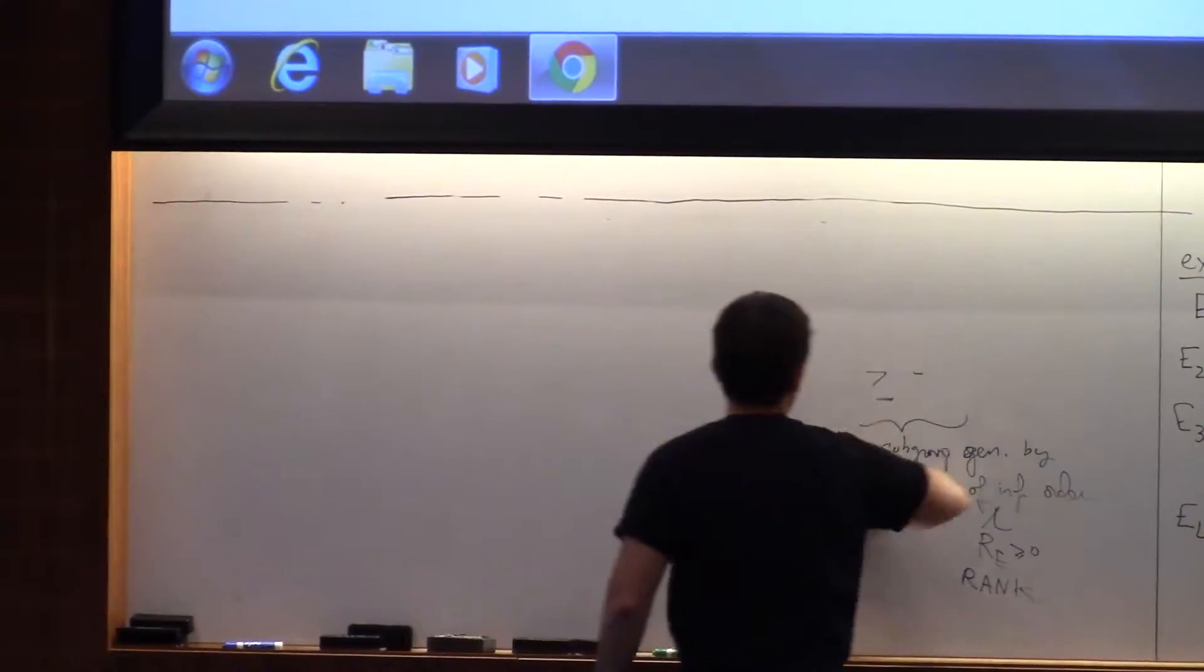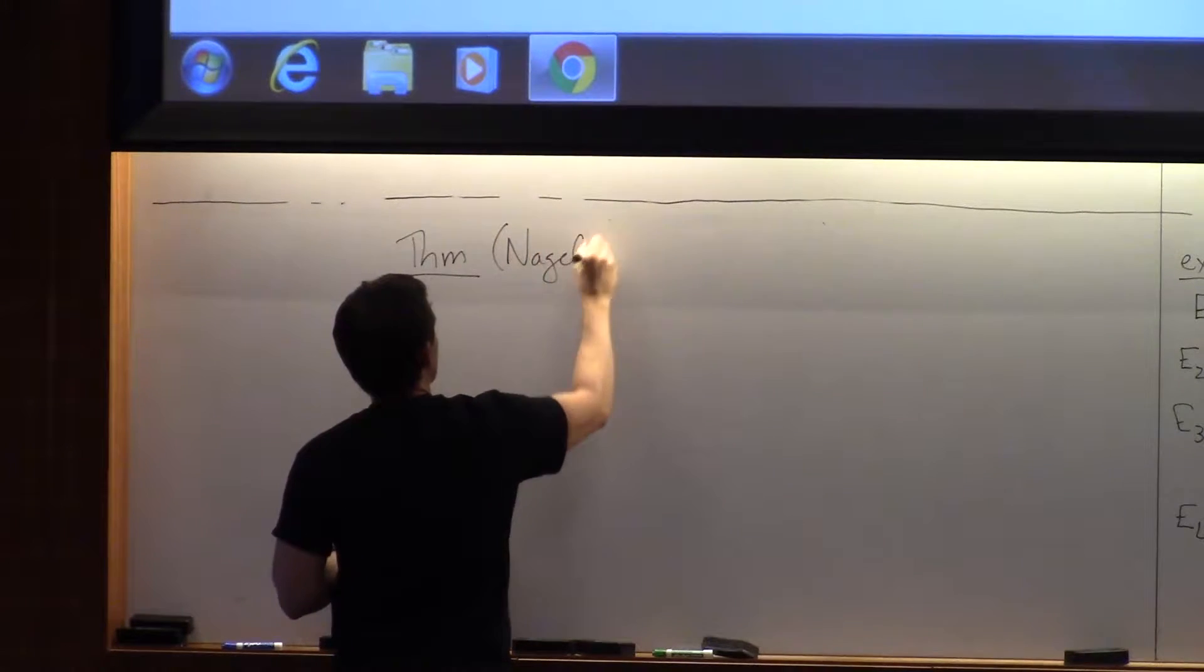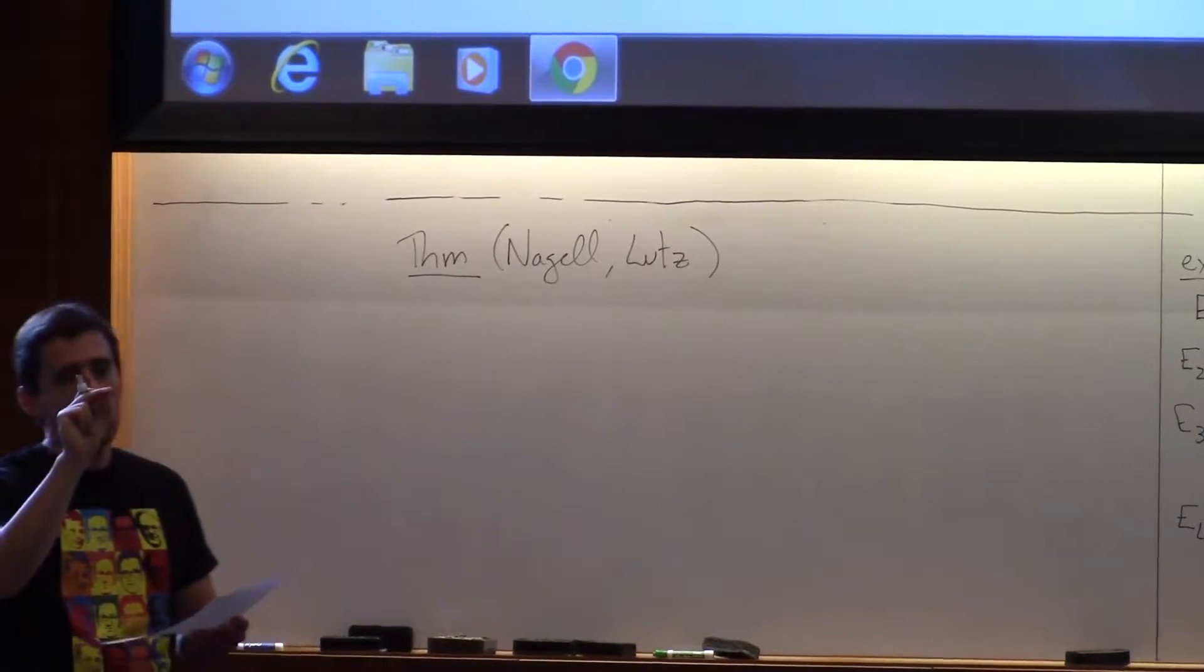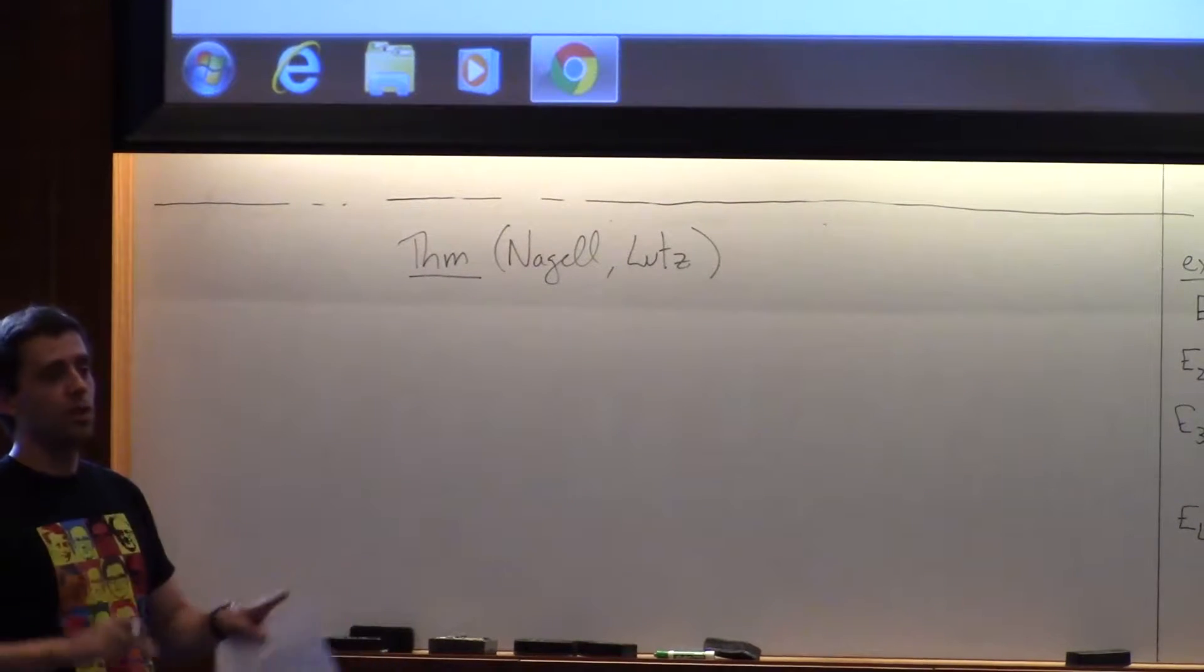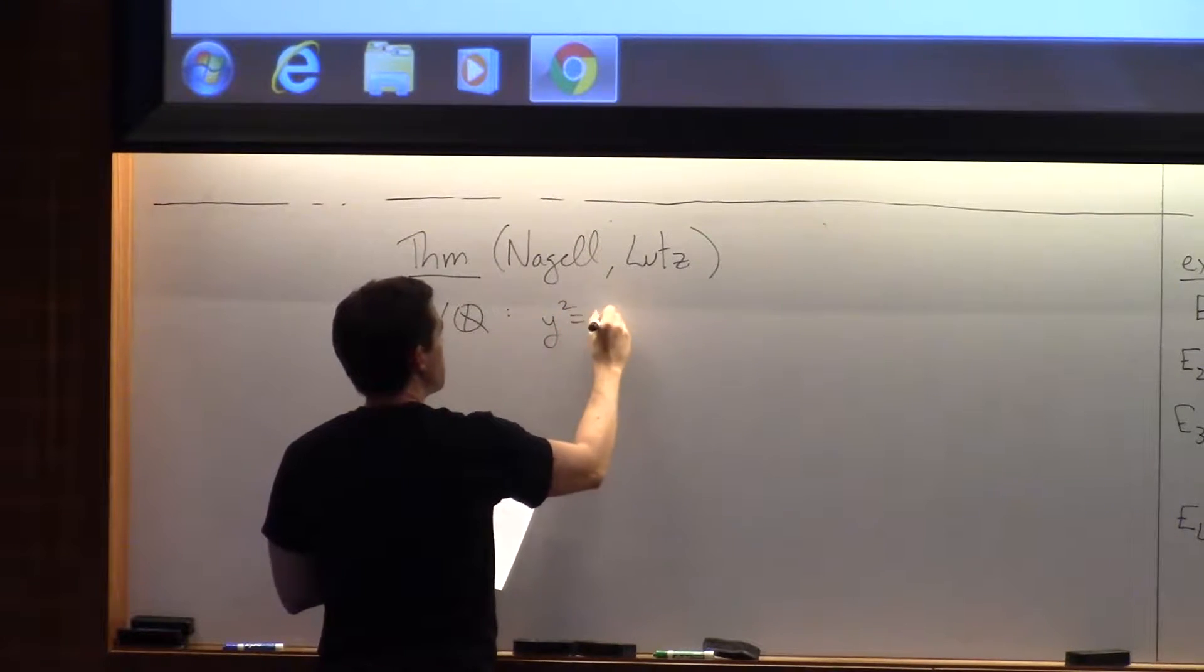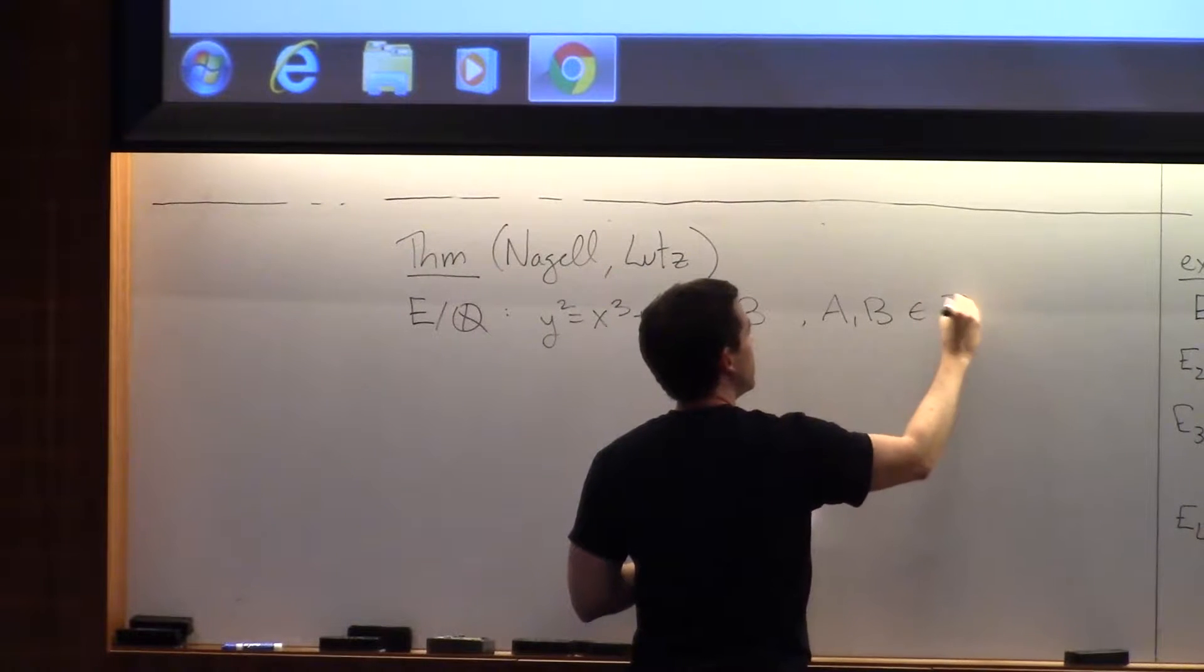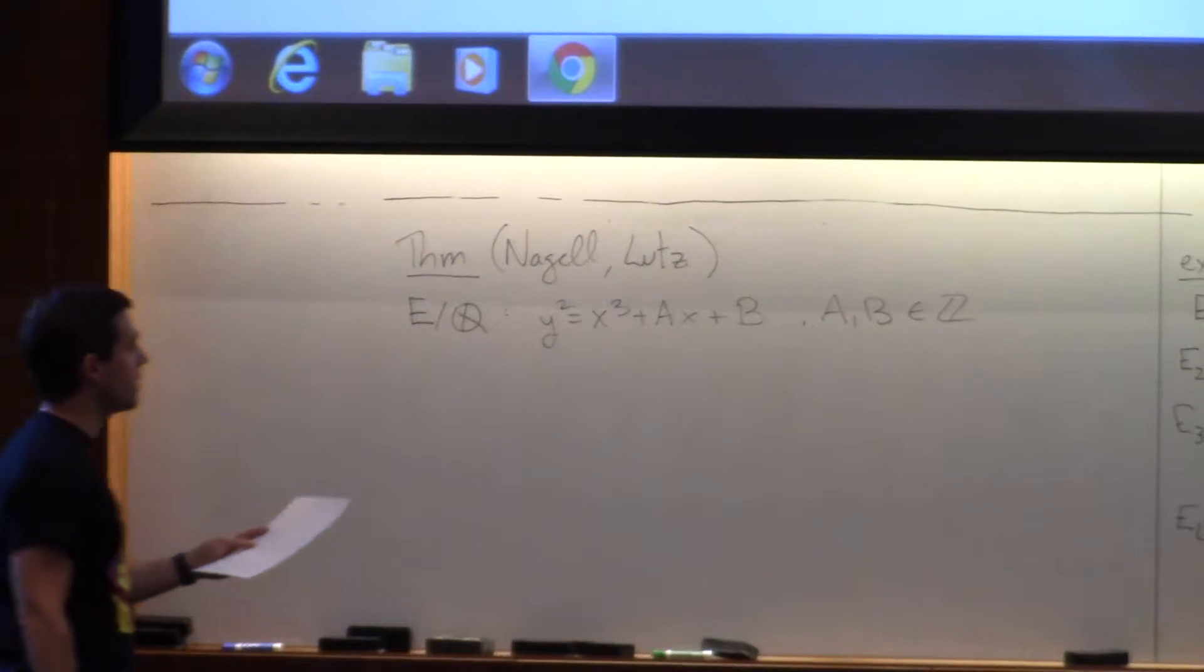So how do we find the torsion subgroup? I believe that in the thirties it was proved, and that's Nagell-Lutz, or Nagell and Lutz. It's not one person, it's two people. And it's not collaboration. It was proved essentially simultaneously by two people that didn't know about each other. So if you have an elliptic curve, bring it to short Weierstrass form. Otherwise, the theorem is a little more difficult and not true. So you better bring it here.